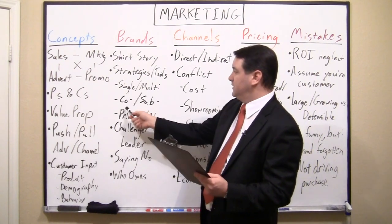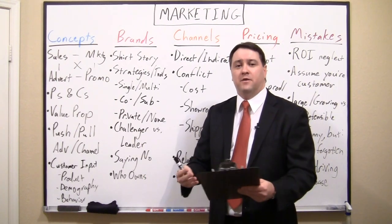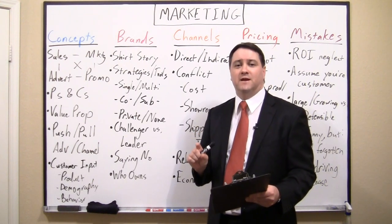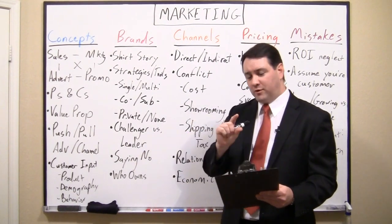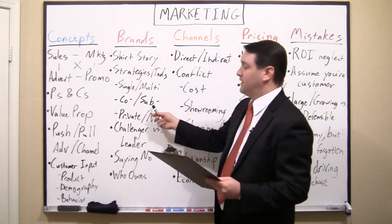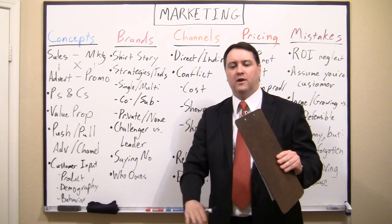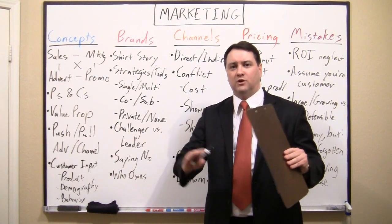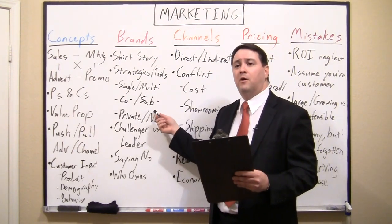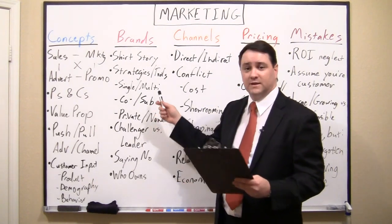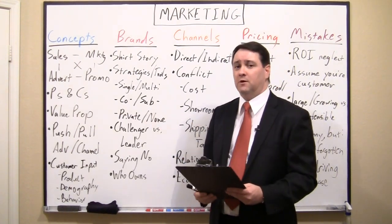You also have the possibility of co-branding — hybrid arrangements where you combine the power of multiple brands. A good example is Crest toothpaste with Scope breath freshener — they combine both brands. You can also have sub-brands, where a brand is considered a sub-part of a larger brand, often at a lower level. For example, Armani is a premium suit maker, but then they have Armani Exchange, which is a lower-end, more accessible brand at much lower prices.